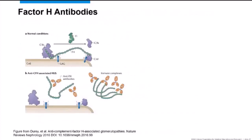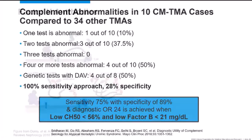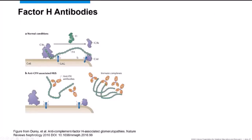Factor H antibodies were not originally included in the panel. Factor H is a regulator that competes with factor B and inhibits the cascade. It binds glycosaminoglycan residues on host cell surfaces to protect them from further complement damage. If a C3b fragment is deposited on a host cell, factor H signals that it is a self cell and should not be further damaged. Antibodies to factor H that prevent this binding allow C3b to persist, potentially promoting MAC formation and cell lysis.